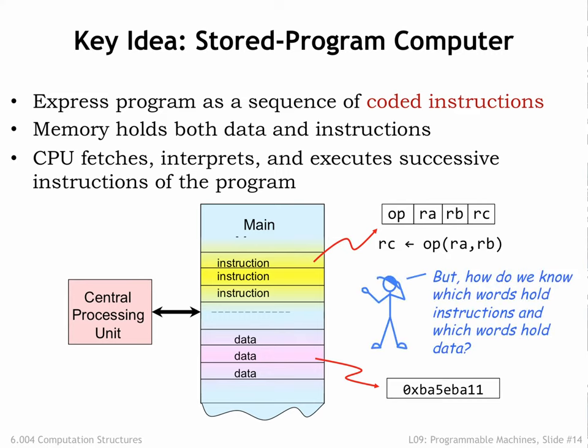Mr. Blue is asking a good question: how do we know which words in memory are instructions and which are data? After all, they're both binary values. The answer is that we can't tell by looking at the values. It's how they're used by the CPU that distinguishes instructions from data. If a value is loaded into the data path, it's being used as data. If a value is loaded by the control logic, it's being used as an instruction.